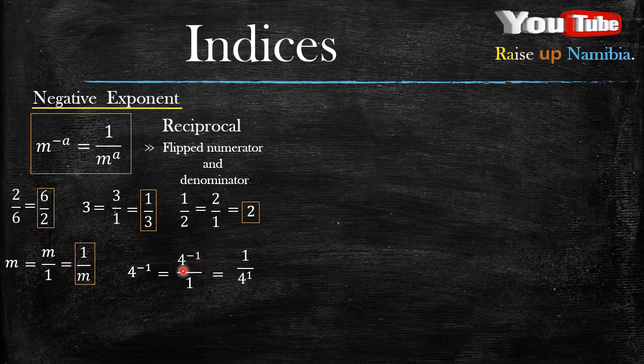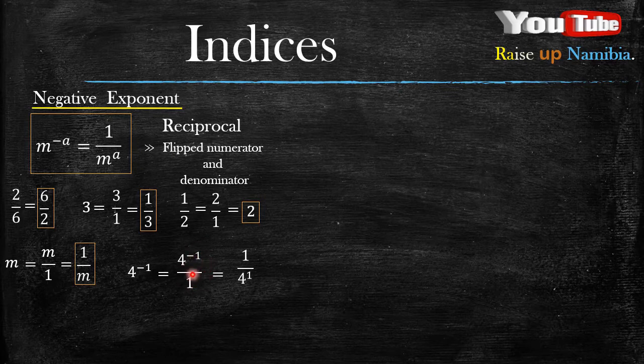So that's why when it was in the numerator here, it was 4 raised to the power of negative 1. But once you find its reciprocal, now it's 4 raised to positive 1.